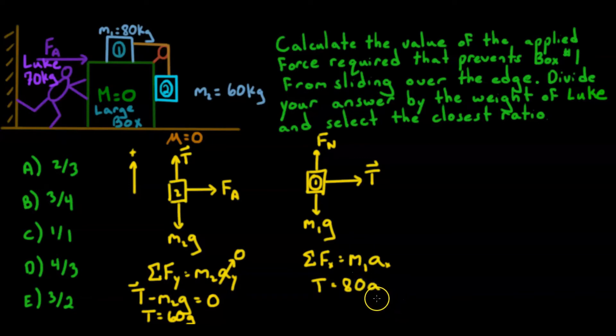Alright, so rearranging, you get acceleration equals tension divided by 80. Okay, so let me just continue a little bit over here. But we know what tension is, it's 60g. So we have acceleration equals 60g divided by 80. And that's 60 kilograms divided by 80 kilograms, which is a ratio of 3 quarters times g. So that's our acceleration.